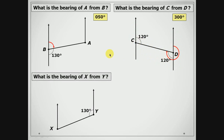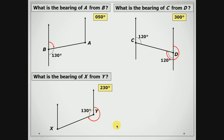What is the bearing of X from Y? We are leaving from Y, extending our line and going in a clockwise direction. So this angle will represent the bearing of X from Y. Now if here is 130 degrees, we should know that a complete turn is 360 degrees. So to find this amount, we subtract 130 degrees from 360 degrees, and that gives us 230 degrees. So the bearing of X from Y is 230 degrees.